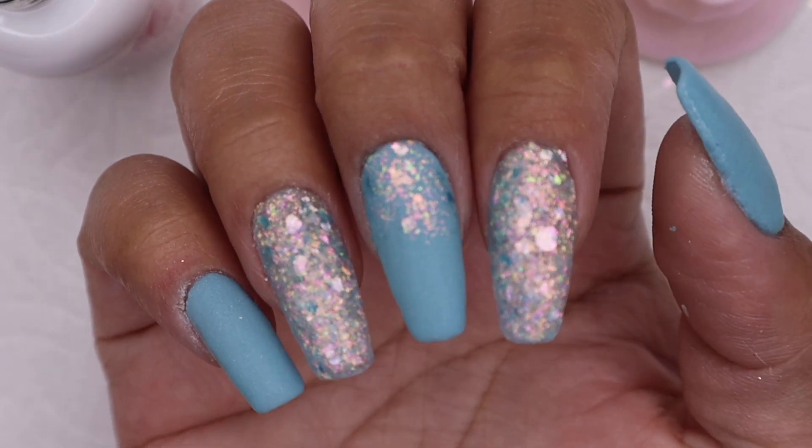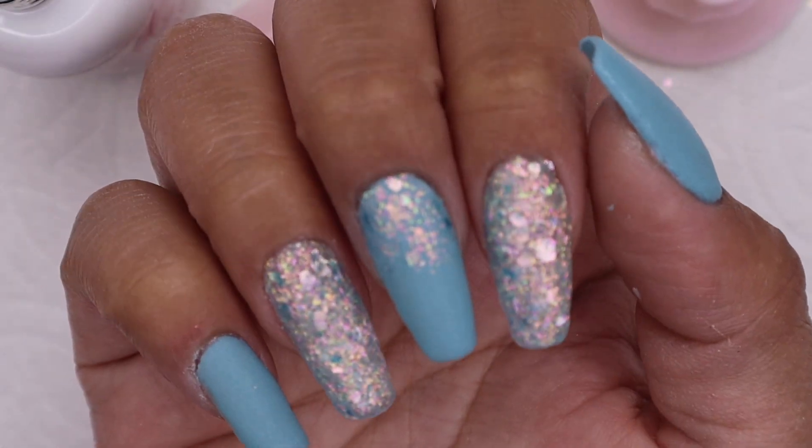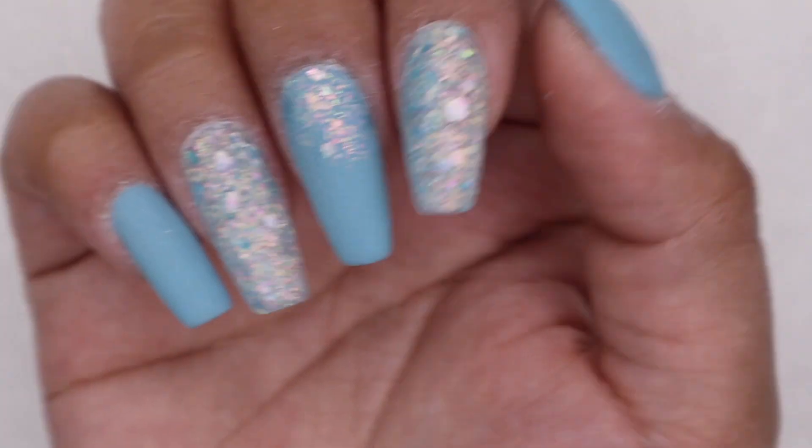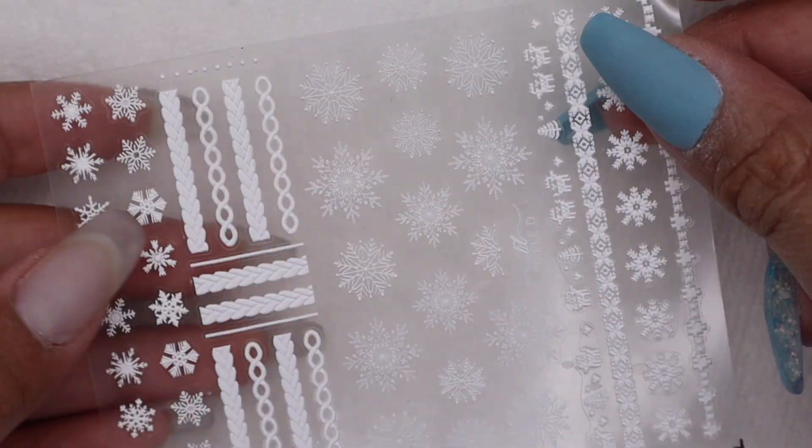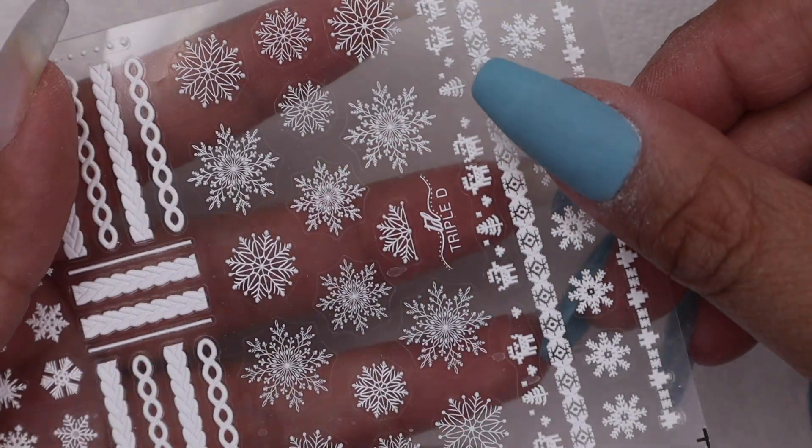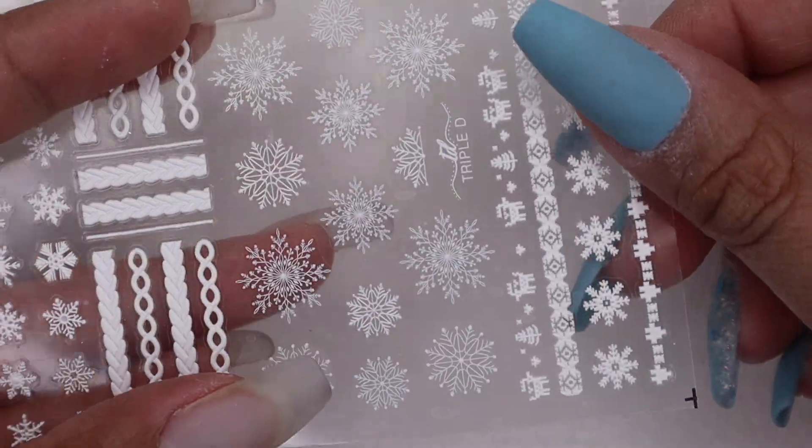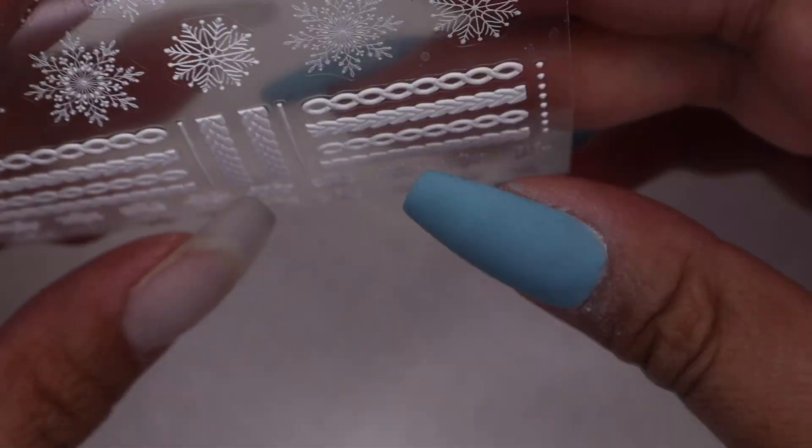Now I am just going to file and shape my nails off-cam. This is after I did that. I just did a minimal filing and shaping because the jelly tips are already nicely shaped.